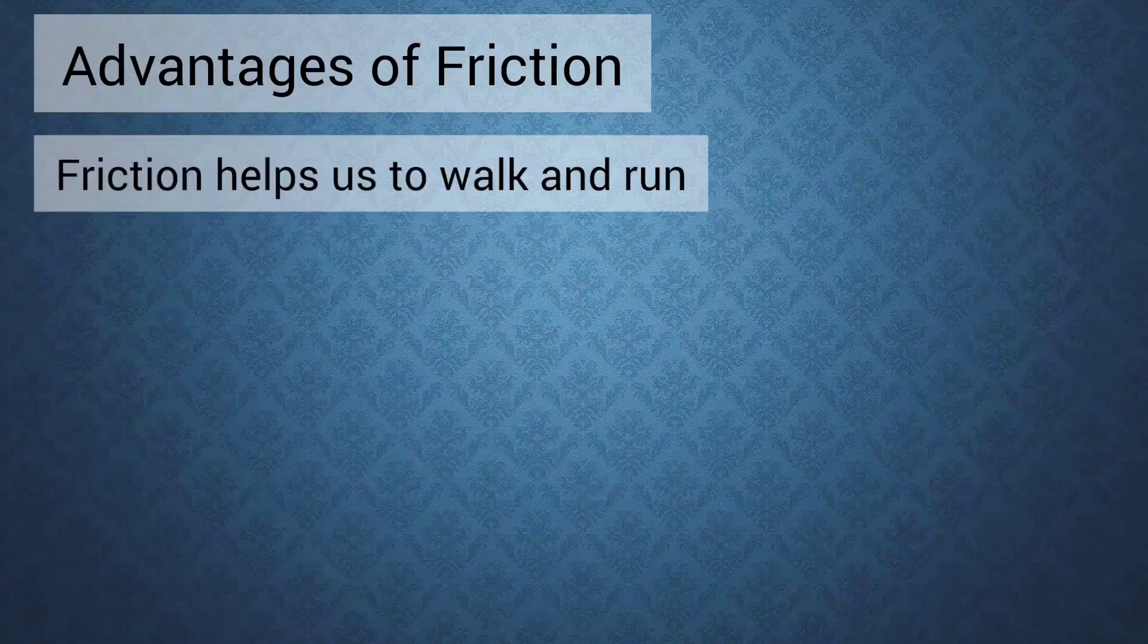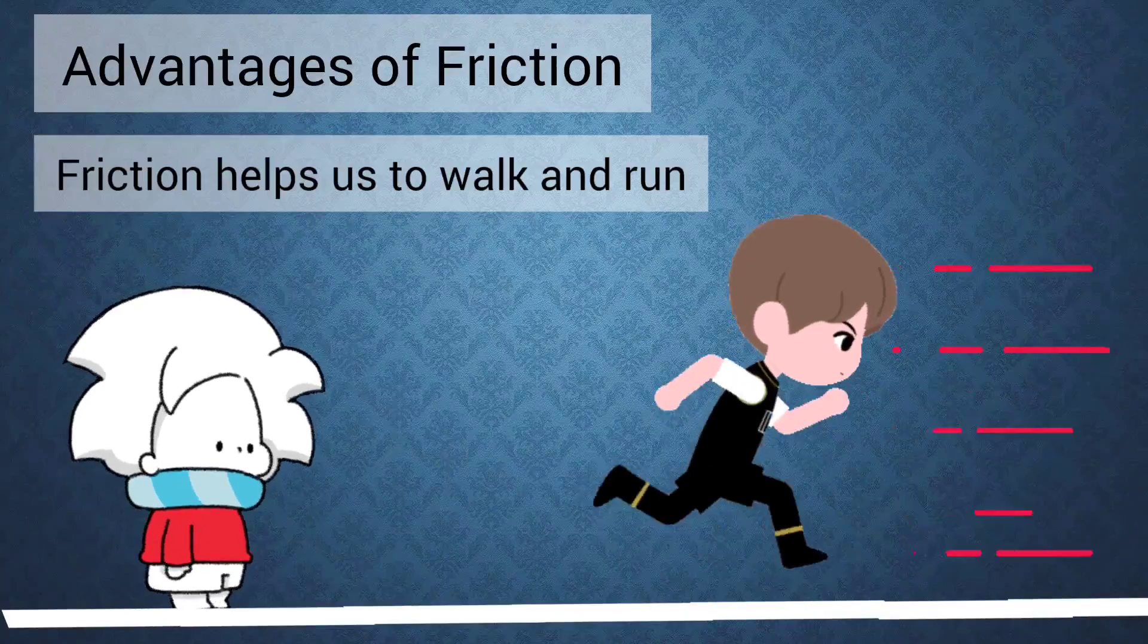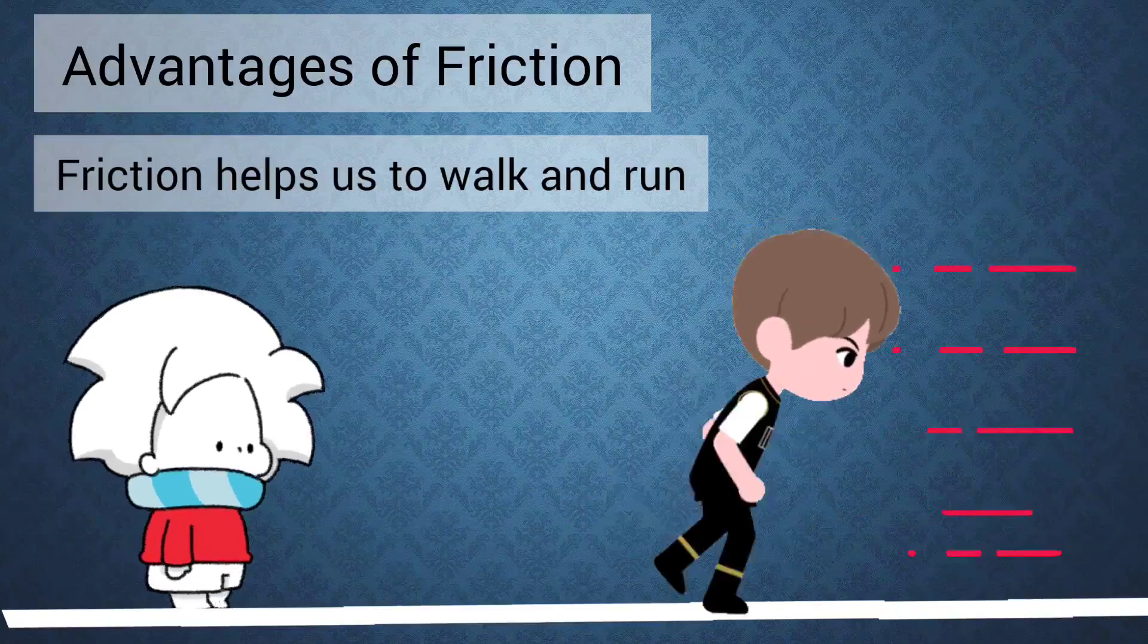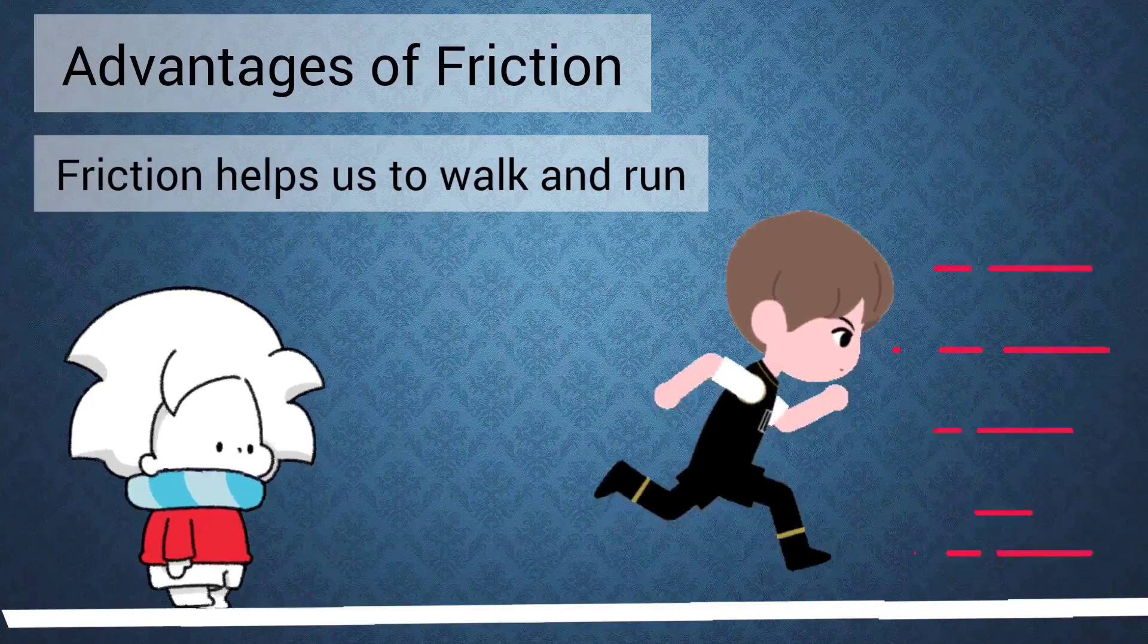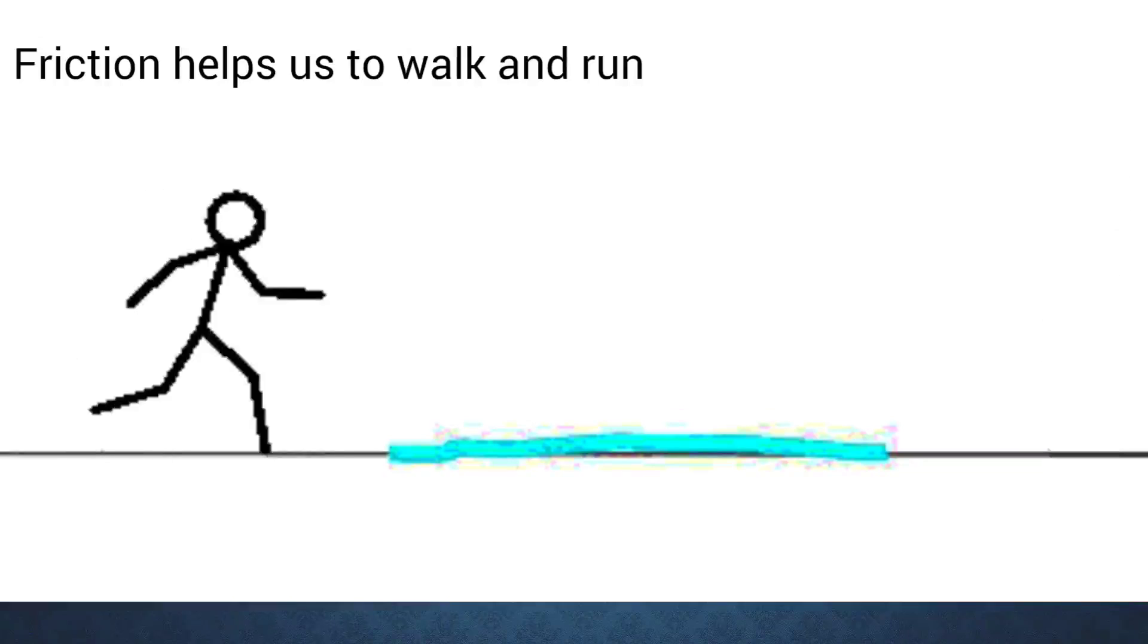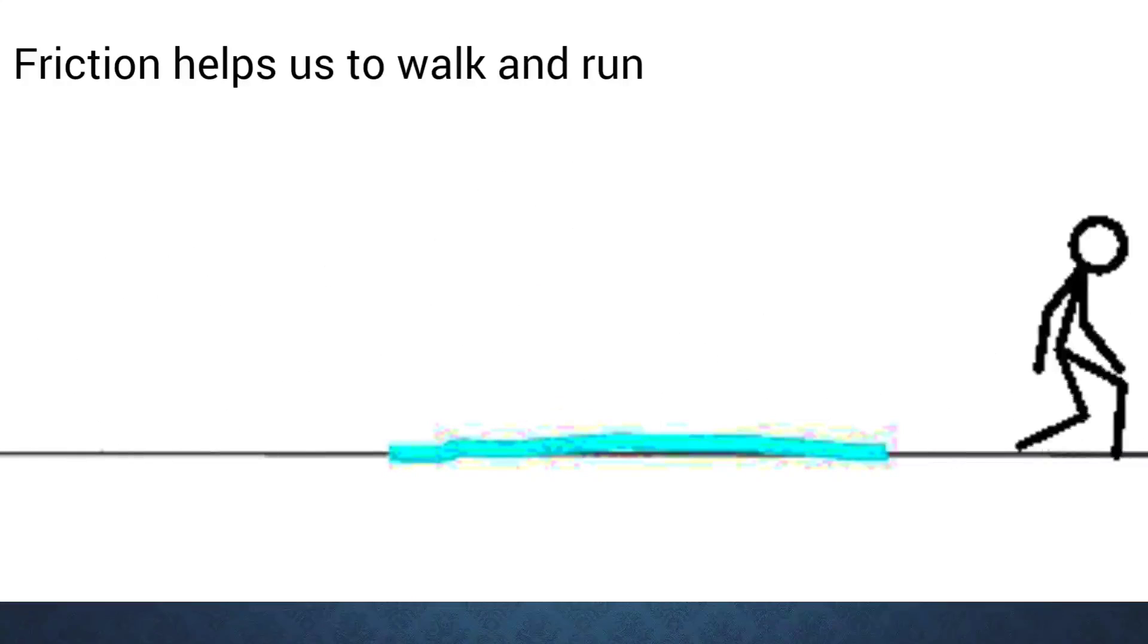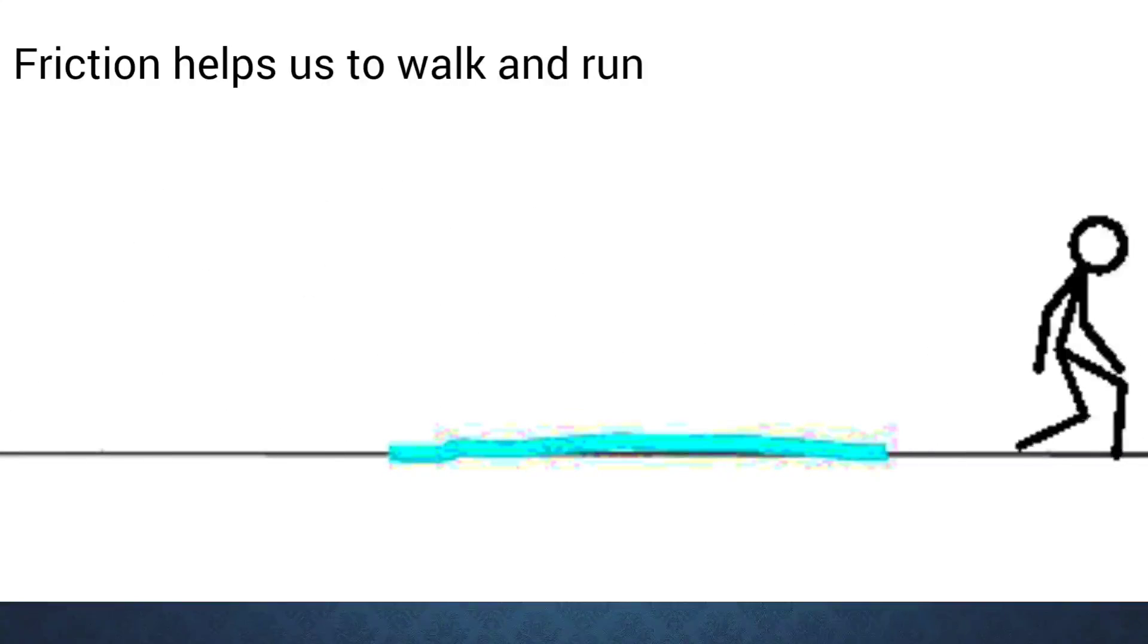Friction helps us to walk and run. When we walk there is friction between our foot or the sole of our shoe and the ground. This prevents us from slipping. Students, if we will try to walk on a wet floor we will slip because the water reduces the friction between our foot and the floor.